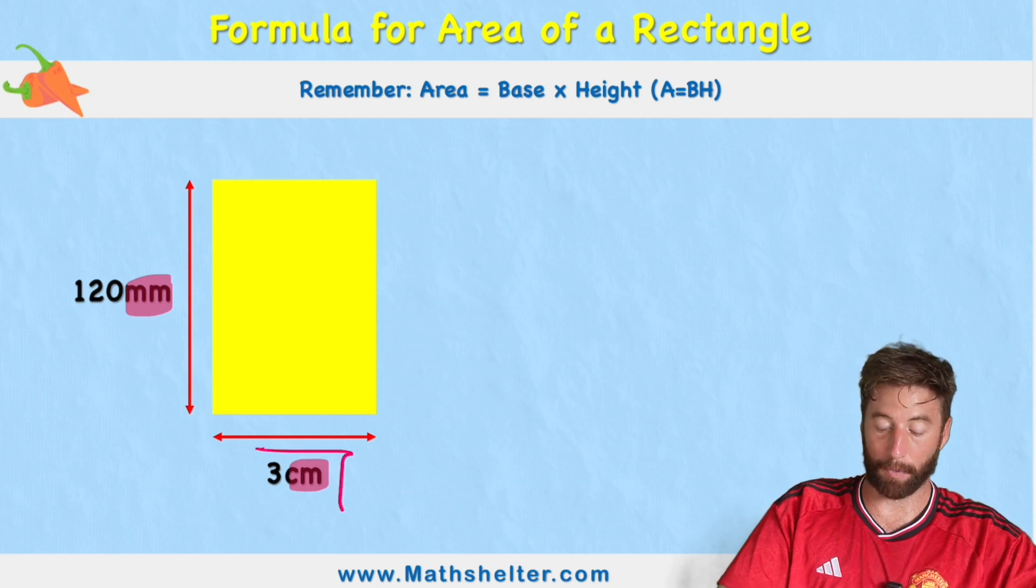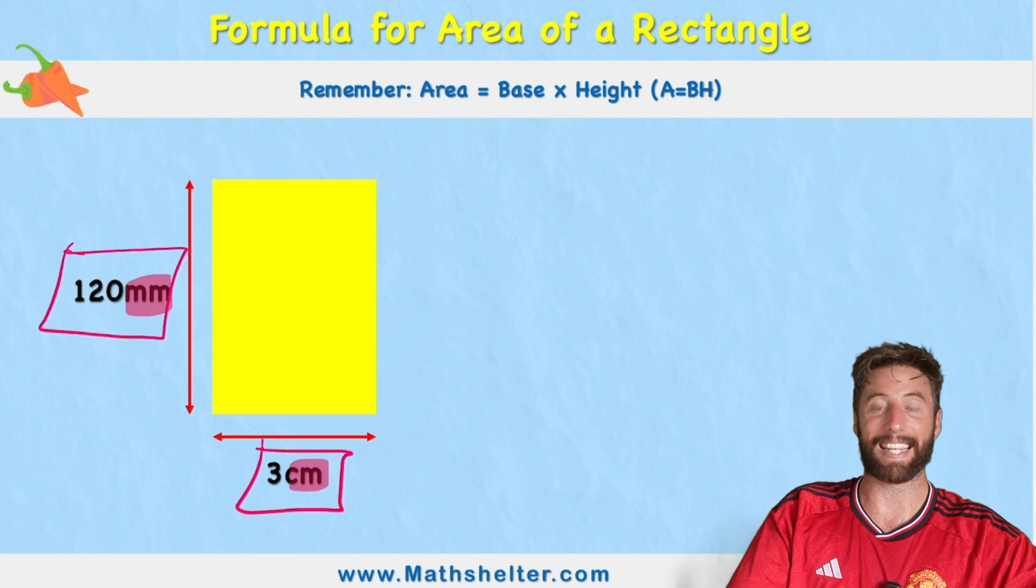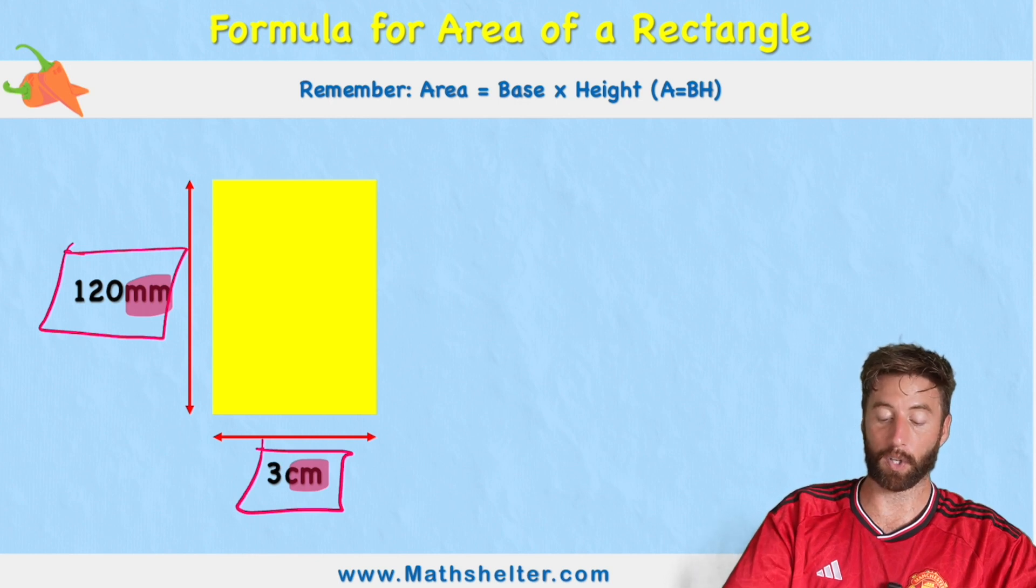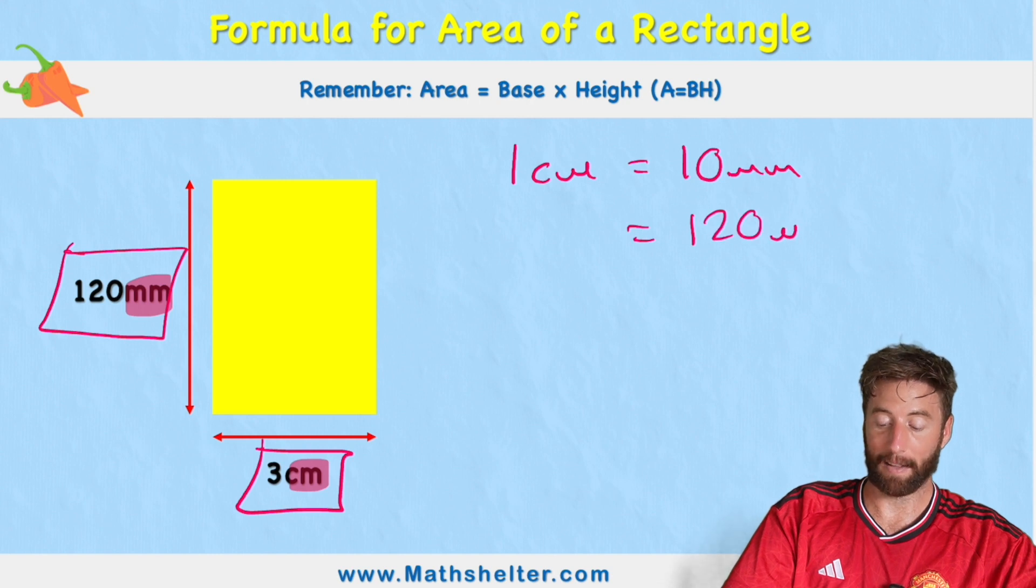So because three is an easier number to work with, I'm going to convert my 120 millimeters into centimeters. So what we need to understand is that for every one centimeter, we have 10 millimeters.